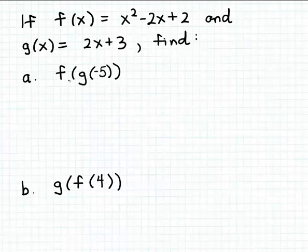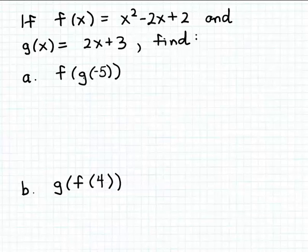In part a, we want to evaluate the expression f of g of minus five. What this expression is asking us to do is first use minus five as input to the function g, calculate the output from g for that input, and then use that output from g as input to the function f. So we're evaluating a couple of functions at inputs in this expression.